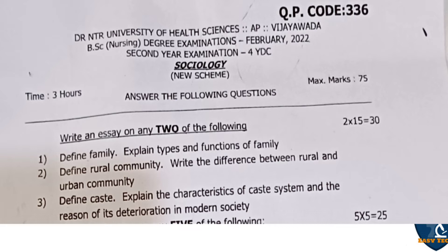Third question: Define caste system, explain the characteristics of caste system and the reason for its deterioration in modern society. 15 marks. Out of these three questions, you have to answer any two. Each question carries 15 marks — 2 into 15 is equal to 30 marks.